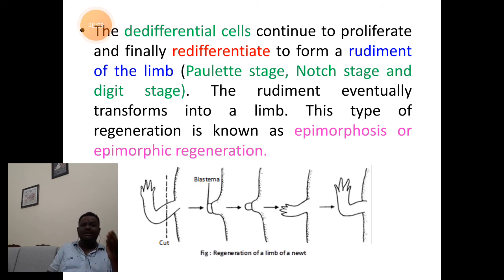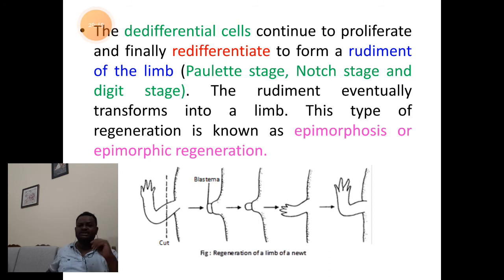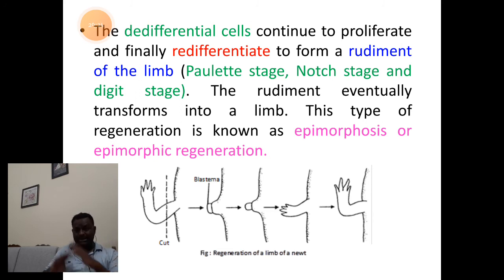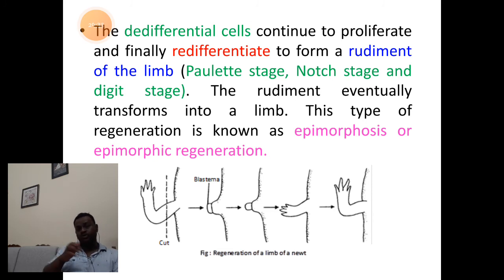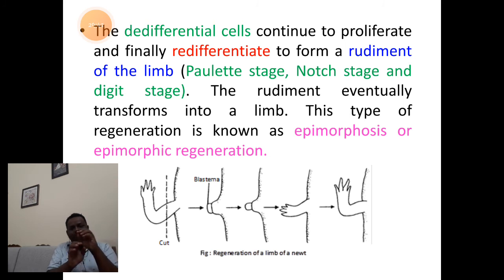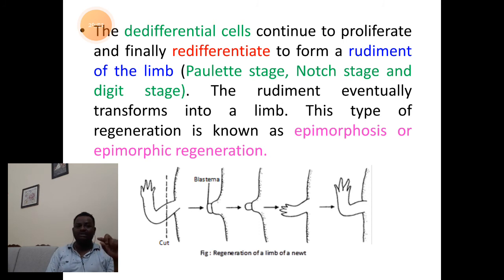This is further followed by special stages: the palette stage, the notch stage, and finally the digit stage. In limb regeneration of the newt, after wound healing by epidermal cover formation, the de-differentiated cells accumulate to form a bud-like structure, which further forms a tiny rudimentary limb that grows to form the full limb structure. The rudimentary part differentiates and regenerates the limb, which we call epimorphosis or epimorphic regeneration.